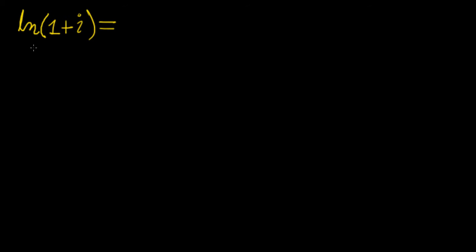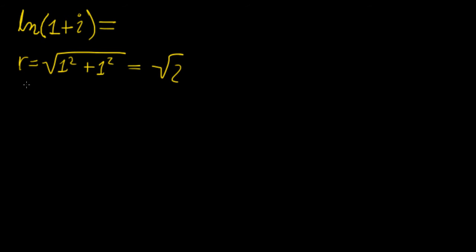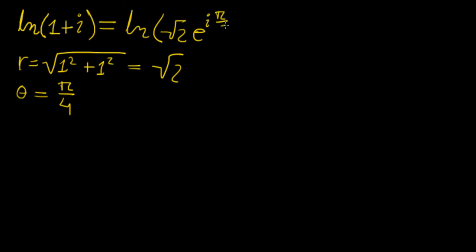First things first, how can we reduce this expression? We notice there's a natural log in front, so if we can put some exponential function here, we can cancel it out and simplify things. We know we can express (1 + i) in polar form: the magnitude is √(1² + 1²) = √2, and the angle is π/4. So this is the same as writing ln(√2 · e^(iπ/4)).